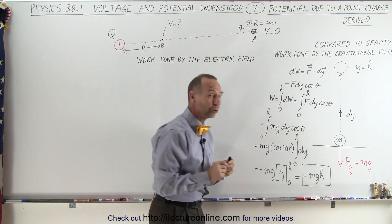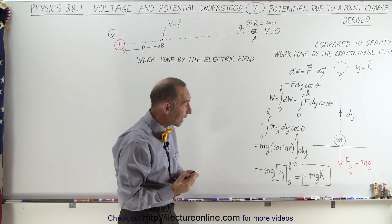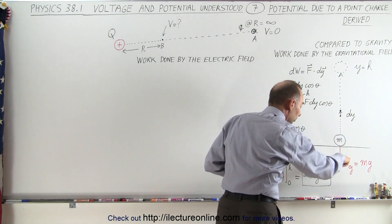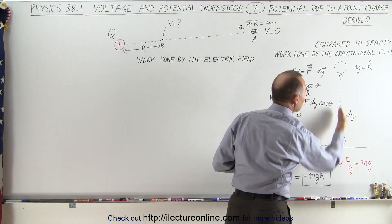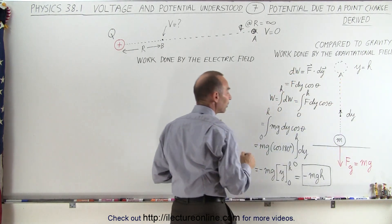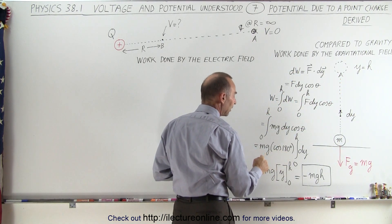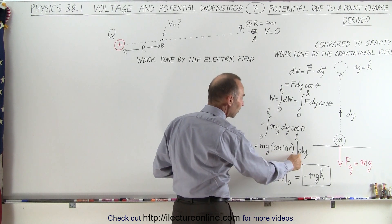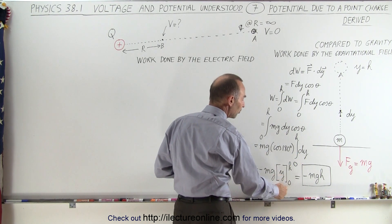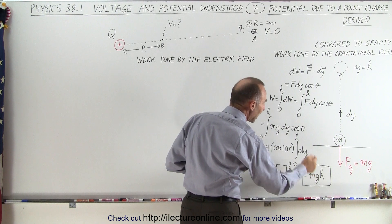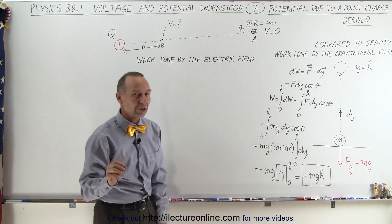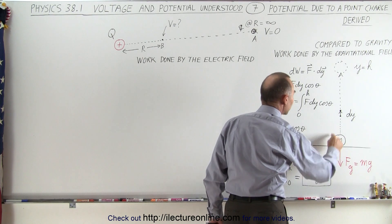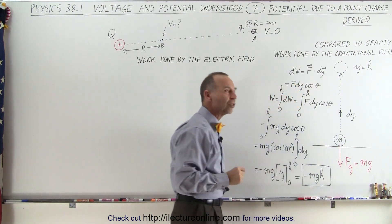The angle theta is 180 degrees because the force of gravity is downward and the displacement is upward, so that's a 180 degree angle. The cosine of 180 is minus 1, so we have minus mg times the integral of dy, which is y from 0 to h, giving minus mgh. So the work done by the gravitational force as m moves from the ground to height h is minus mgh.